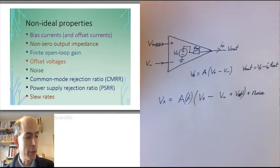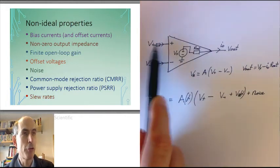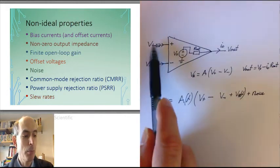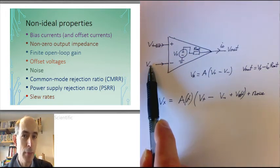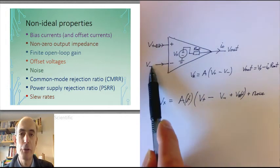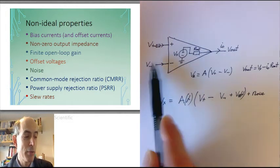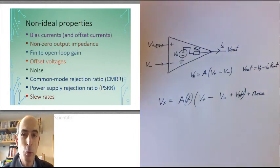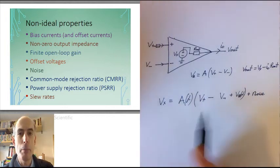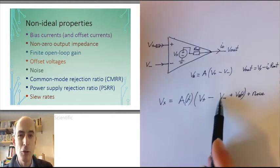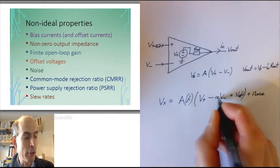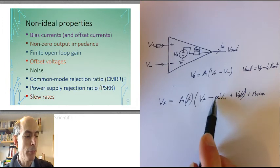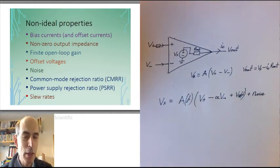There would also be a factor due to the average value of the two input voltages. If V plus and V minus were equal, but both equal to one volt, and if V plus and V minus were equal, but both equal to two volts, then the output of a real op-amp would be different. Another way of thinking about that is that the output of an op-amp is not dependent on the difference between the two inputs. It's dependent on V plus minus alpha times V minus, where alpha is almost, but not quite, equal to one.